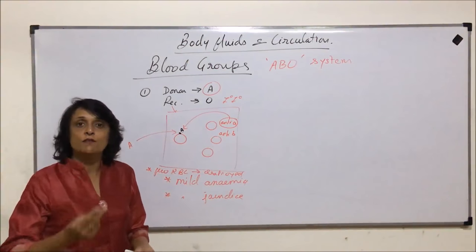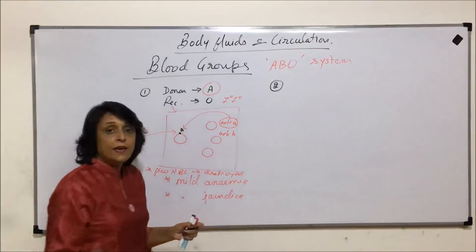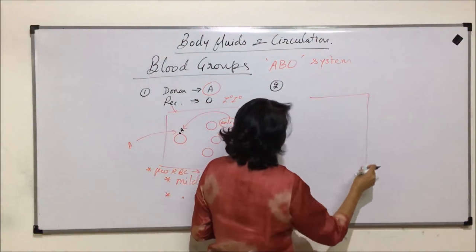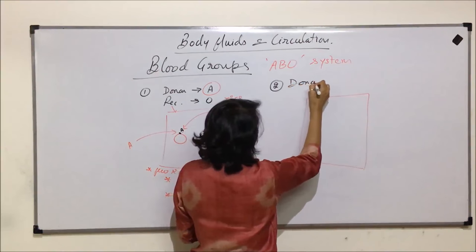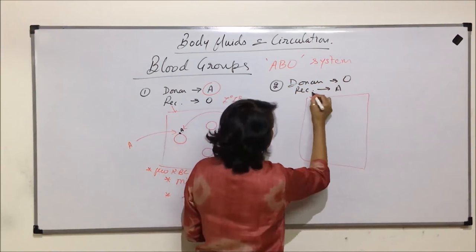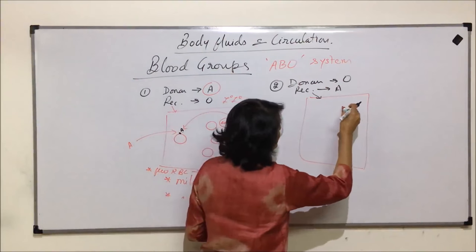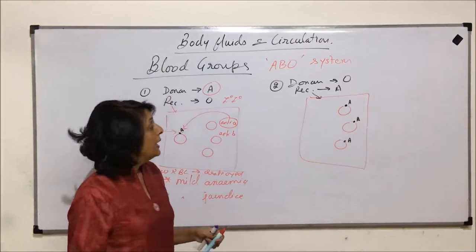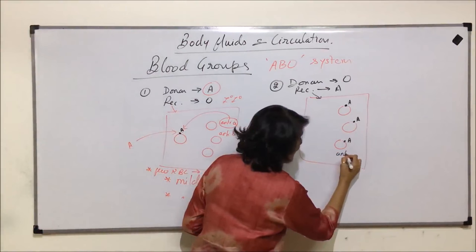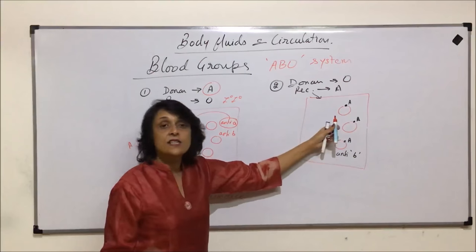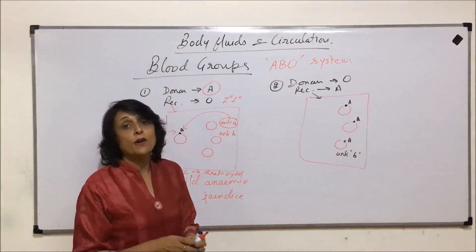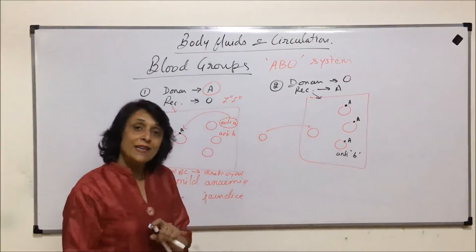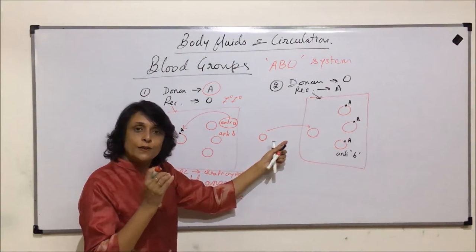Now we take the same situation in reverse — situation 2. Here the donor has blood group O and the recipient has blood group A. In the recipient's body, the RBCs carry antigen A, and the plasma has anti-B, because antigen A is its own and anti-B serves as self-defense. What comes in is blood group O — RBCs without any antigen — but the incoming blood also brings some plasma along with it.